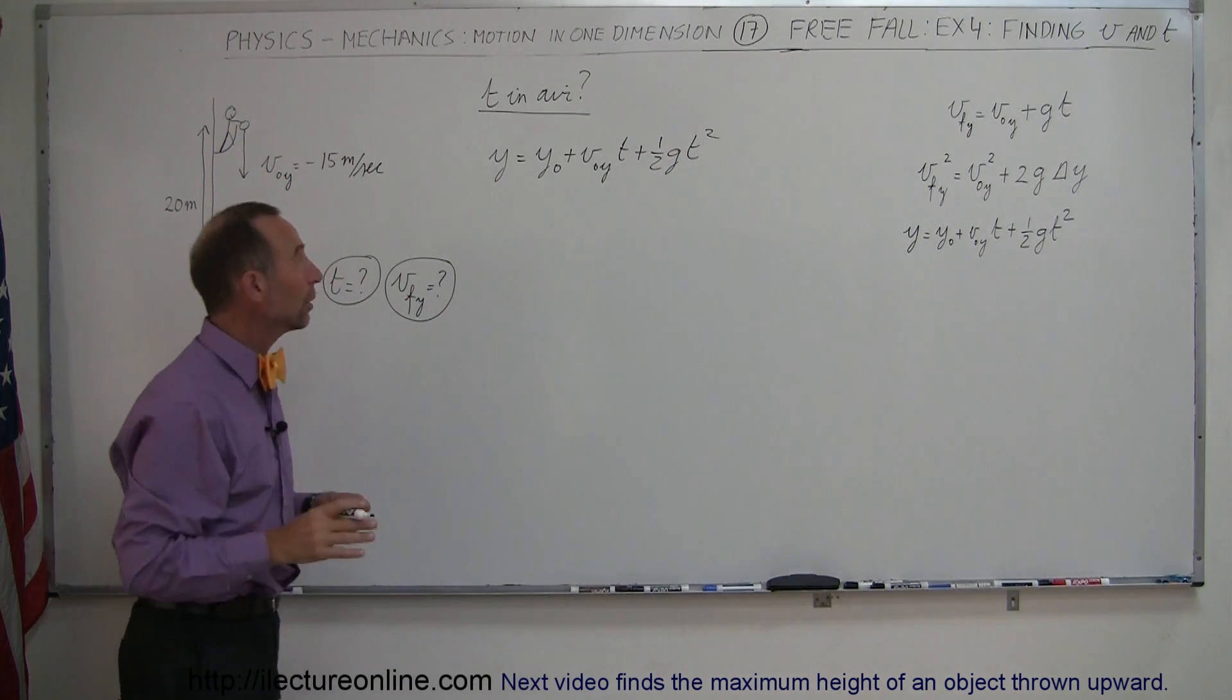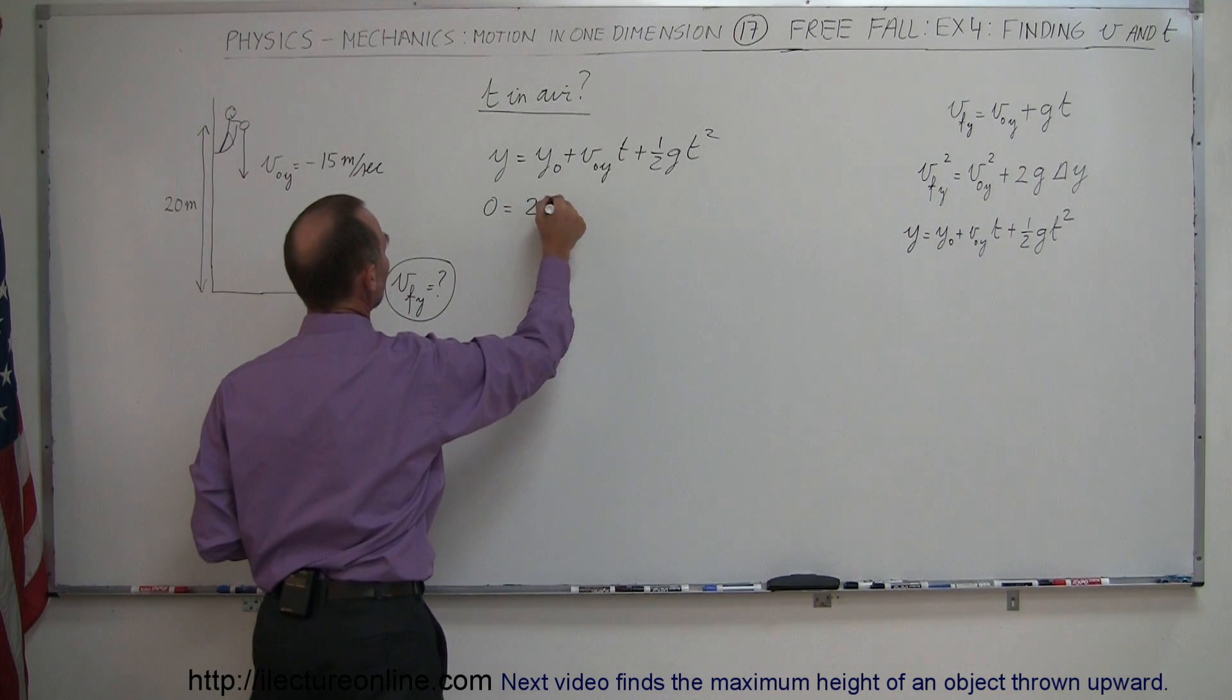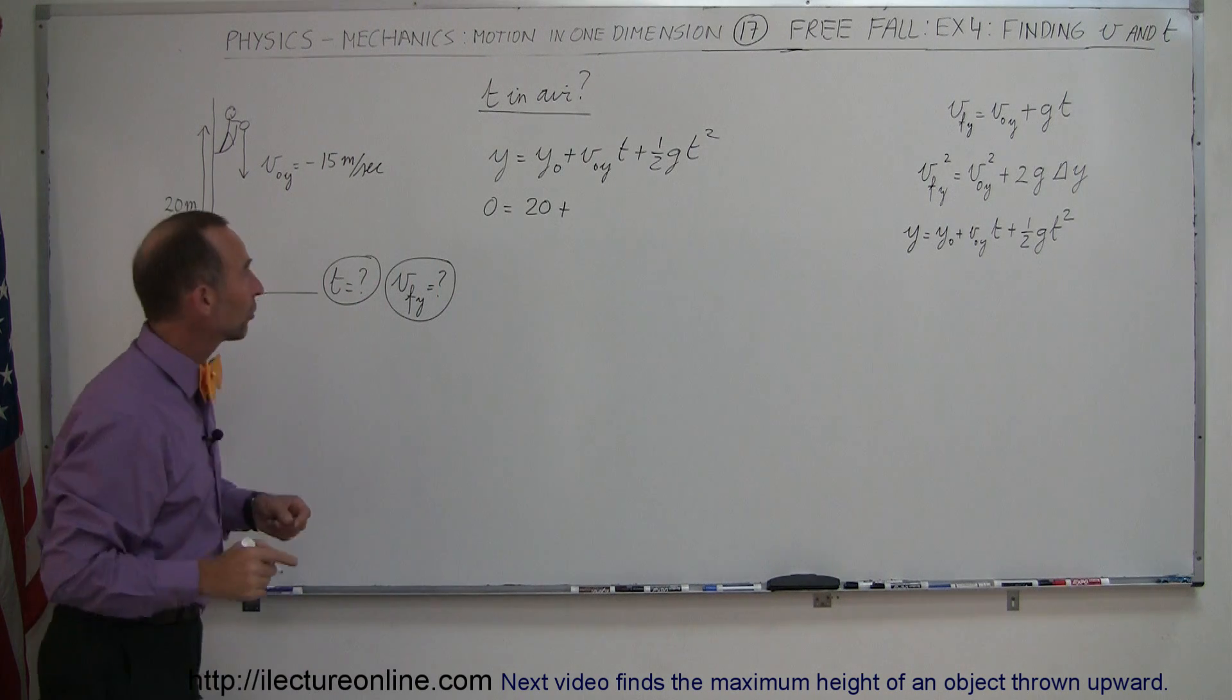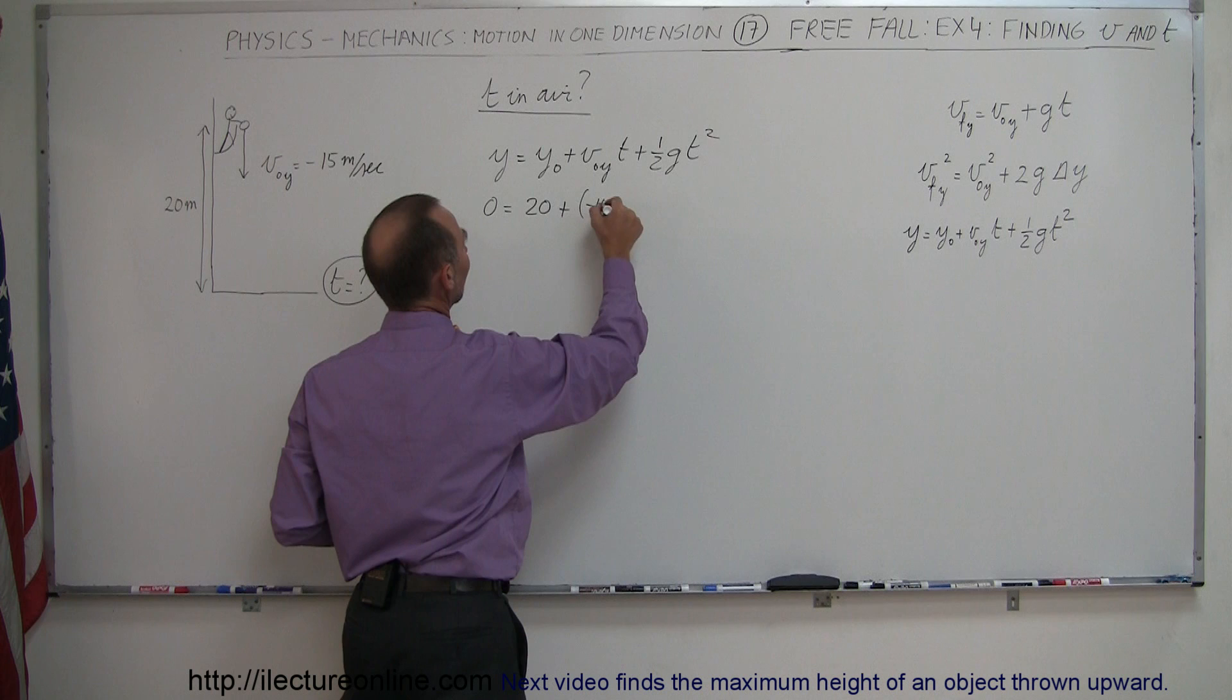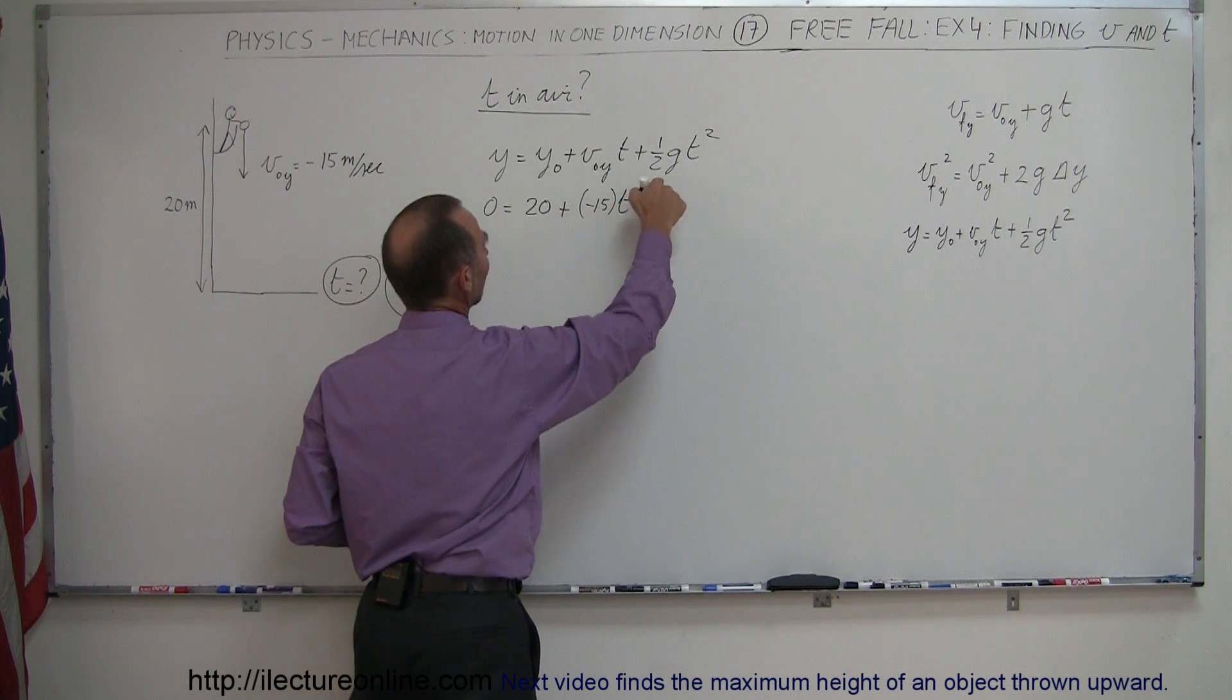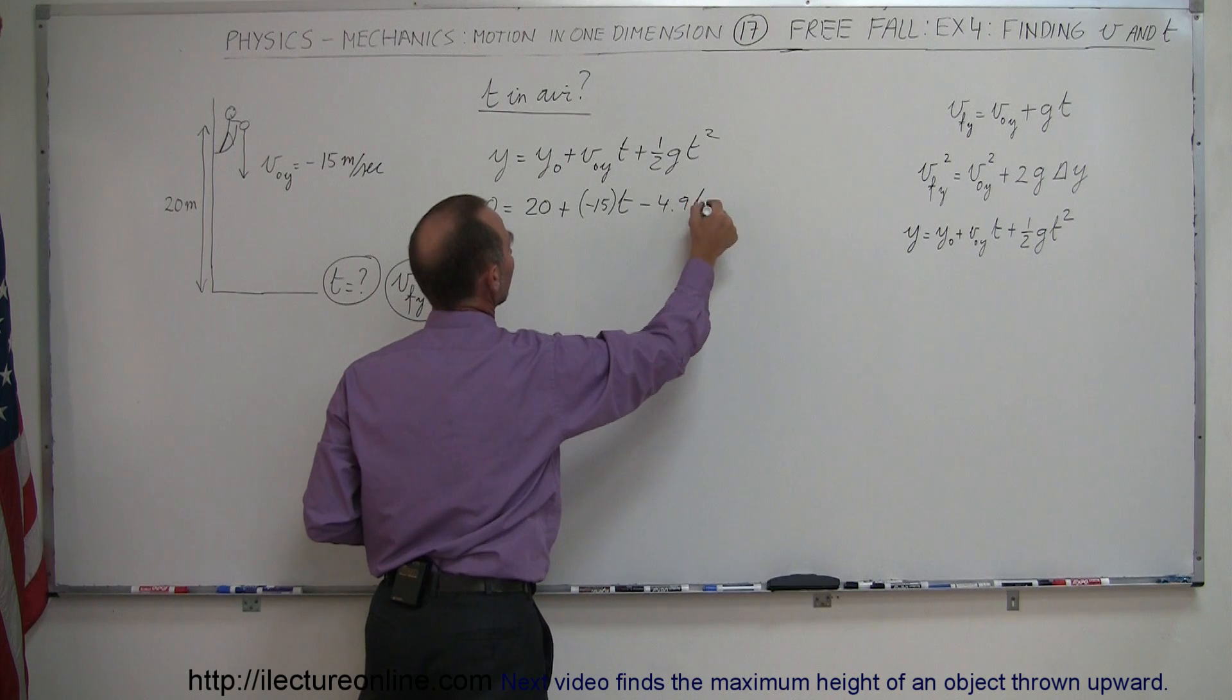Let's plug in all the things that we know. Final height, zero. Initial height, 20 meters. Initial velocity in the y direction is going to be a negative 15, so negative 15 times time, and of course g being minus 9.8, that's minus 4.9 t squared.